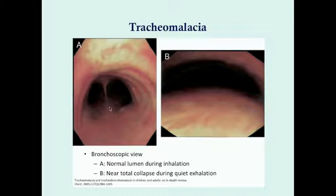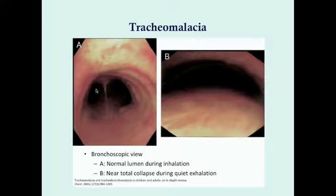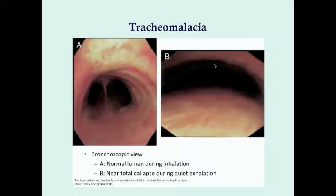On a bronchoscopic view at the carina, during inhalation the airway appears open and normal, but during expiration there is near-total collapse of the trachea.